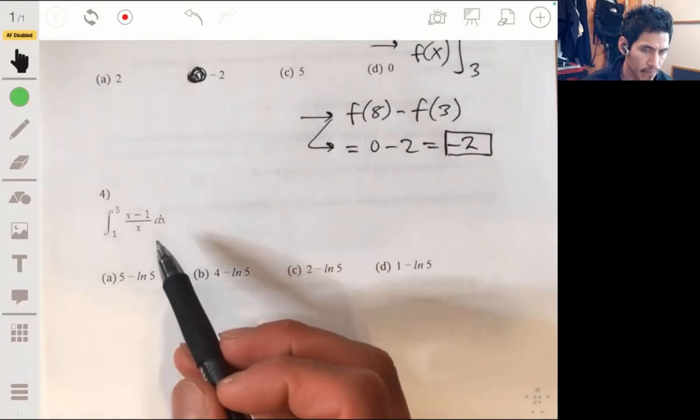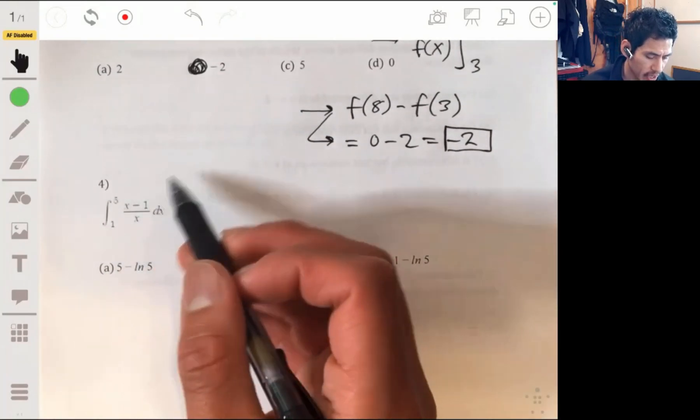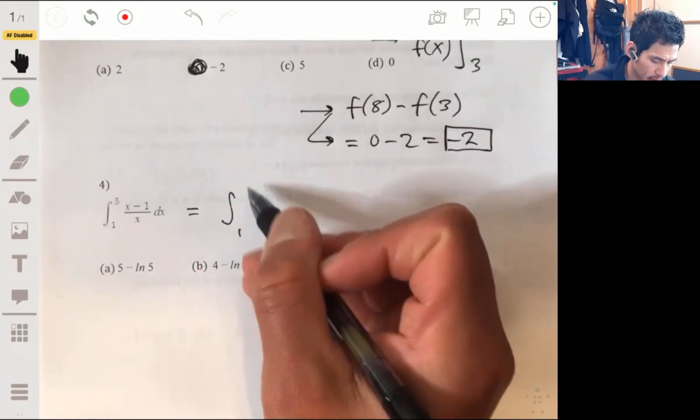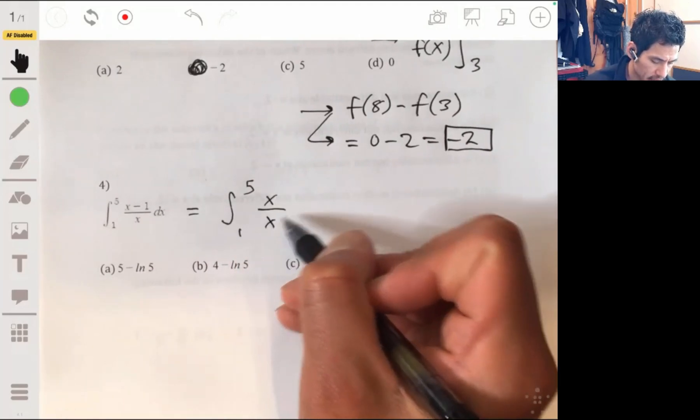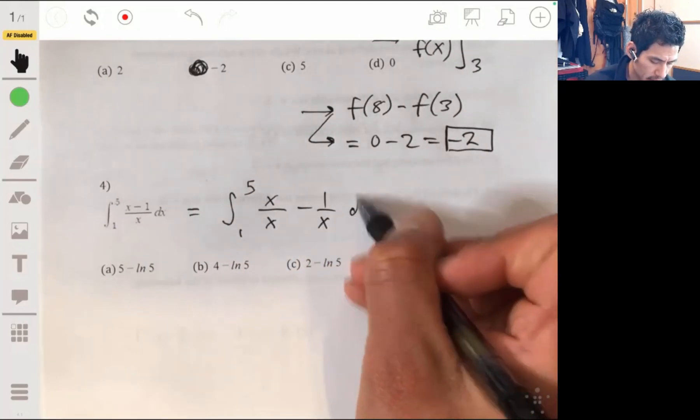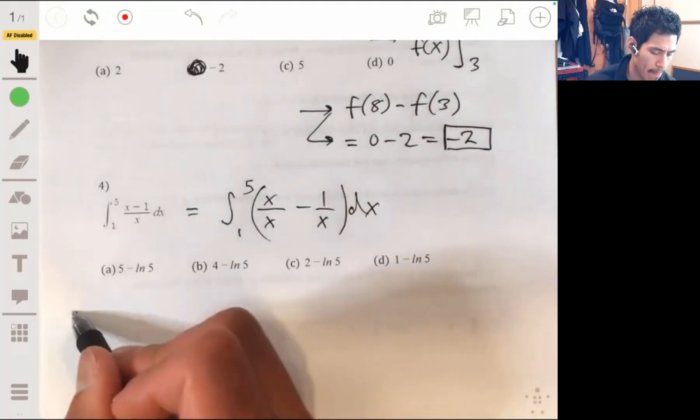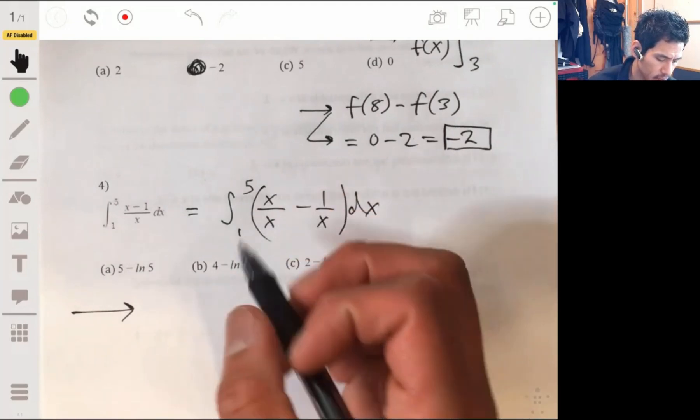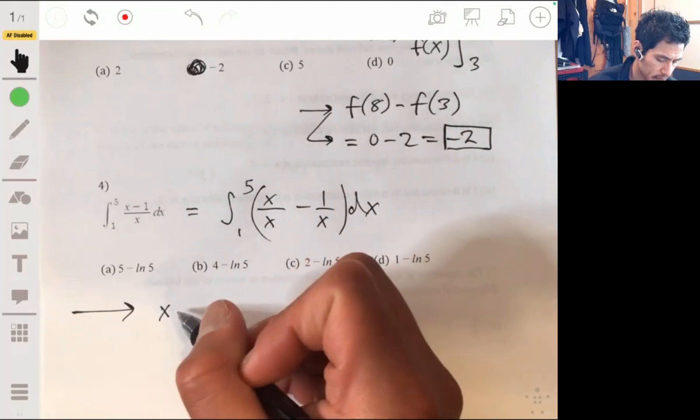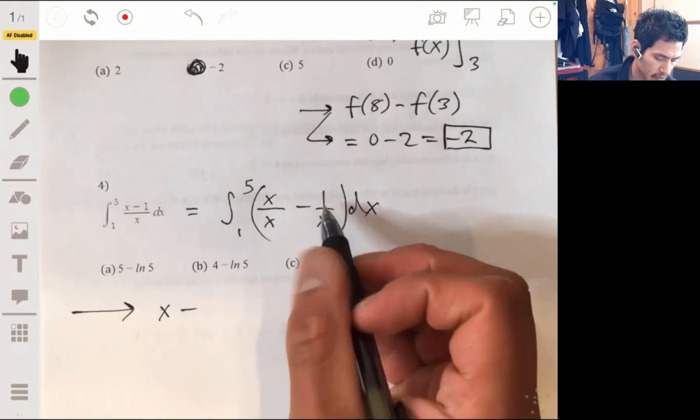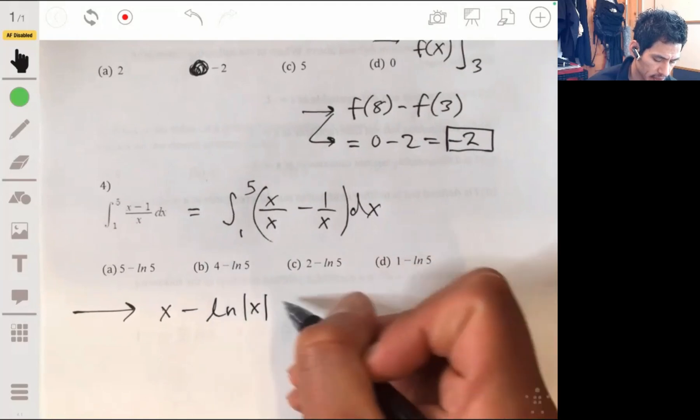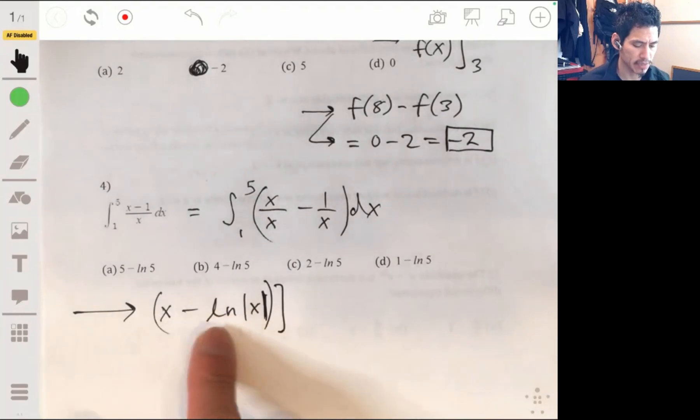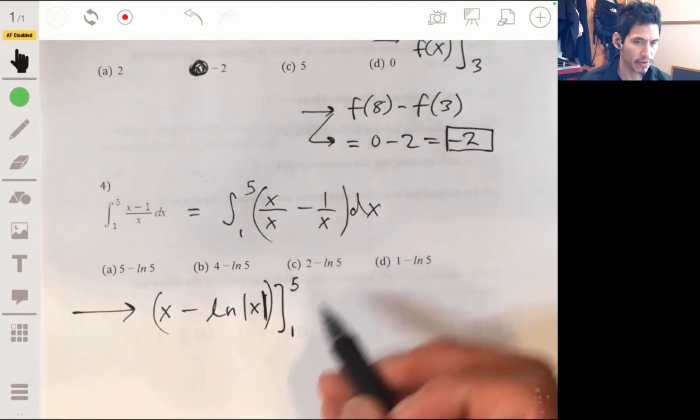Problem four, integral from 1 to 5 of (x minus 1) over x dx. Let's just break this up like so. So, we have x over x minus 1 over x dx. And from there, this is just 1. We can have x, the antiderivative of 1 over x is the natural log of absolute value of x. So, our expression will be x minus the natural log of x, and we're going to go from 1 to 5.